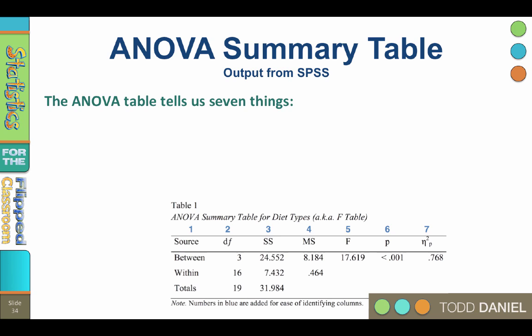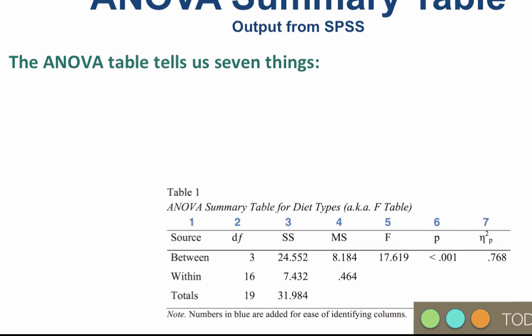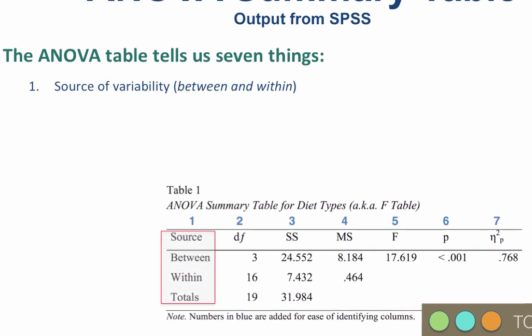Another unique feature of the ANOVA test is something called the ANOVA summary table. Because there is so much information to know about in the ANOVA model and the sources of variance, it is much clearer to put all of this information into a table. The ANOVA summary table tells us seven things. Number one, the source of variability: between, within, total, that goes in column one.